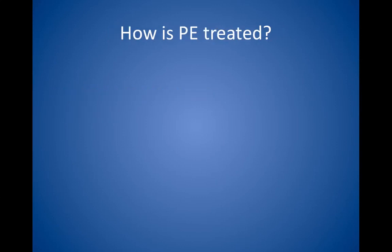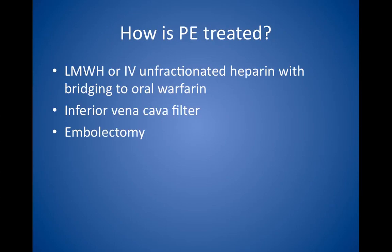How is PE treated? PE is treated initially with low molecular weight heparin or IV unfractionated heparin to prevent further clots and emboli. Then the patient switches gradually to oral warfarin, which must be taken for at least three to six months. In patients with recurrent clots on anticoagulation or contraindications to anticoagulation, an inferior vena cava filter should be used. In patients with massive PE, embolectomy — either surgical or catheter — or pharmacologic thrombolysis, for example TPA, may be attempted.